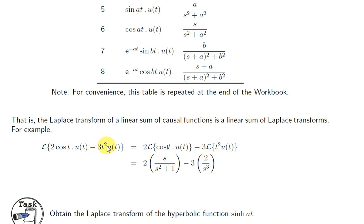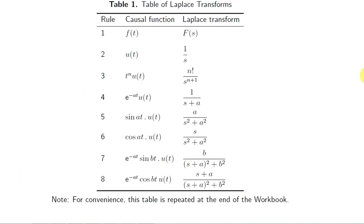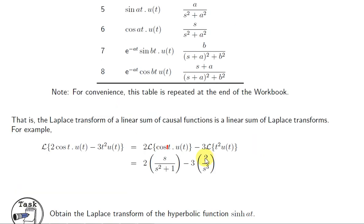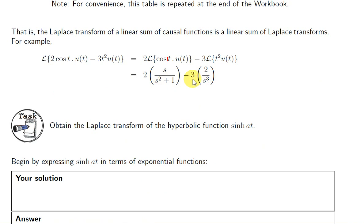The next function is minus 3t². We can take out the minus 3 and get L of t². Looking up t squared in the table, we use t to the power of n and replace n with 2, giving 2 factorial over s cubed. Since 2 factorial is just 2, we have minus 3 times 2 over s cubed. Combining these two results gives us the complete transform of the original function.